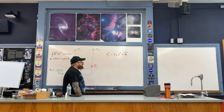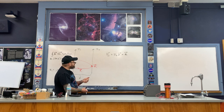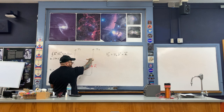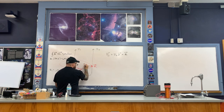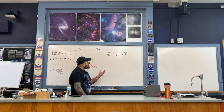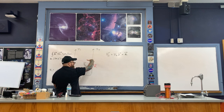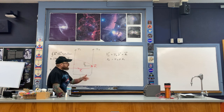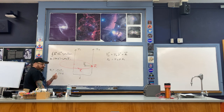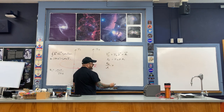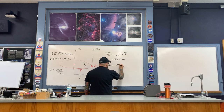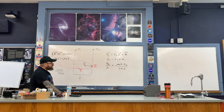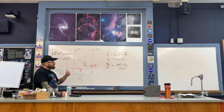Now applying the right-hand rule for the cross product: I2 L in the upward direction crossed with B1 into the page gives a force vector pointing toward wire 1. There is a 90-degree angle between I2 L and B1, so the magnitude of the force is simply I2 times L times B1. Dividing by length L and substituting for B1 gives the force per unit length on wire 2 due to wire 1: μ₀ I1 I2 divided by 2πd.